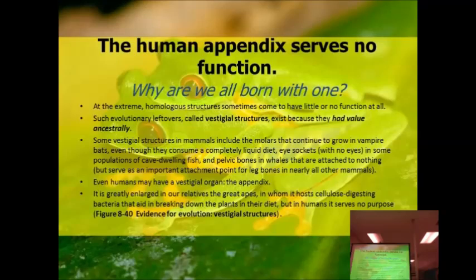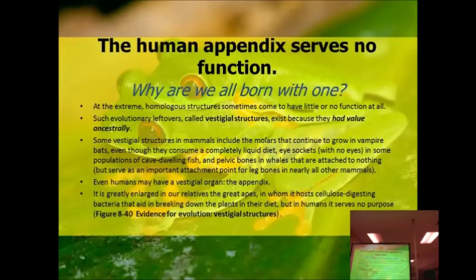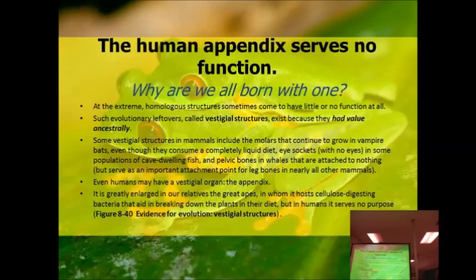Evolutionarily, back maybe hundreds of thousands of years ago, the appendix may have served some purpose. If you think about the great apes like chimpanzees or gorillas, they use the appendix because the primary thing they eat is plants — the appendix helps in digesting all of that cellulose. Since we have gone on to cook our food for thousands of years, we don't use the appendix anymore. Other vestigial structures — meaning something that's left over evolutionarily — include things like the molars in vampire bats.